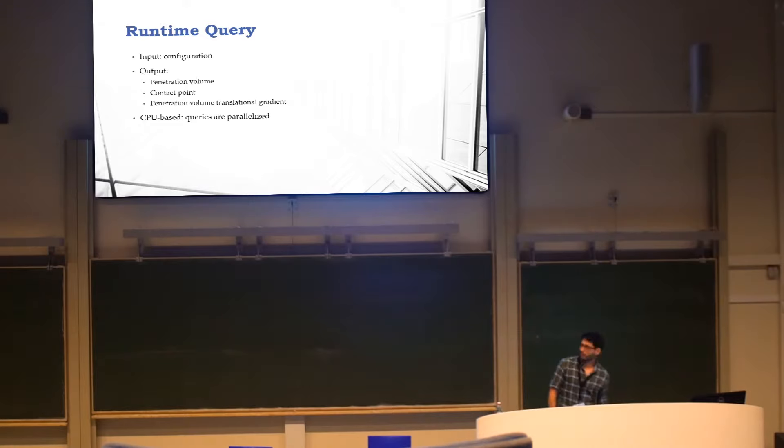As for runtime, at runtime we have a given configuration, and we want to estimate three measures. The first is the penetration volume, that would help us determine the magnitude of a penalty force. The second is the contact point, and that would allow us to determine where to apply the forces. The third is determining the direction of the penalty force, and the penetration volume translation gradient would help us with that. I'm not going, within the slides, into the subject of the simulation layer, which is a complete other layer on top of this one, but this one we do want from that.